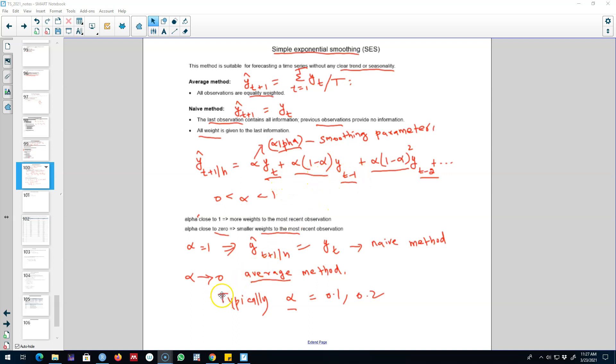On the other hand, if alpha is closer to 0, small weights are assigned to the most recent observations and the weights decay pretty slowly over time.